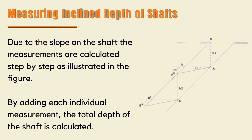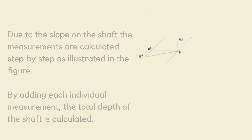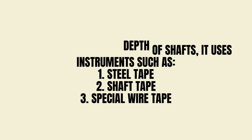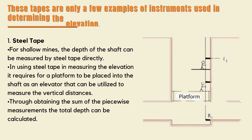Although a hoisting rope or wire is elastic and stretches to a measurable extent, this method is good for shallow shafts where the elasticity of the wire gives a negligible amount of stretch. In measuring inclined depth of shafts, due to the slope, measurements are calculated step by step as illustrated in the figure. By adding each individual measurement, the total depth of the shaft is calculated. In measuring vertical depth of shafts, instruments such as steel tape, shaft tape, and special wire tape are used. These tapes are only a few examples of instruments used in determining elevation. For shallow mines, the depth of shafts can be measured by steel tape directly.